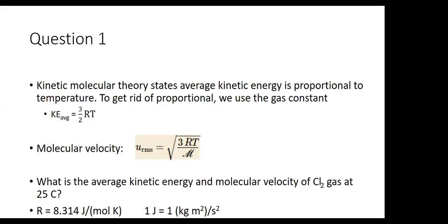We're going to continue and jump straight into kinetic molecular theory again. We just said kinetic energy is proportional to temperature — we can actually put an equation to this. Our equation is: average kinetic energy equals three-halves (1.5) times R times T, where R is the gas constant and T is temperature. If we want to know velocity — how fast a gas is moving — that is the square root of (3RT/M), where M is molecular weight.